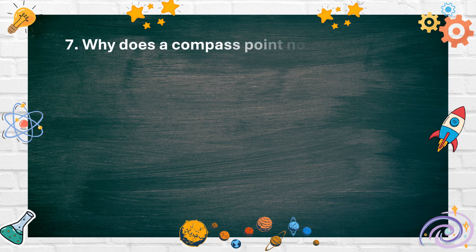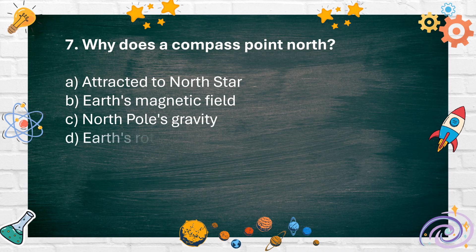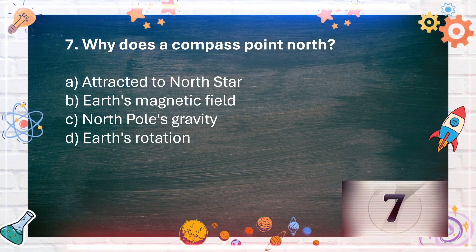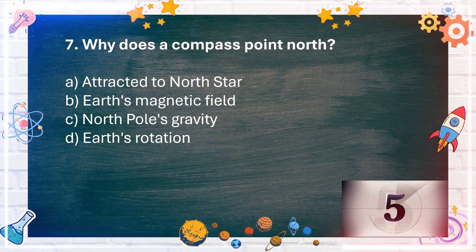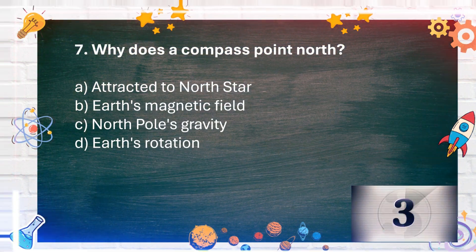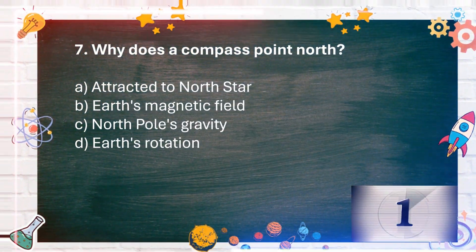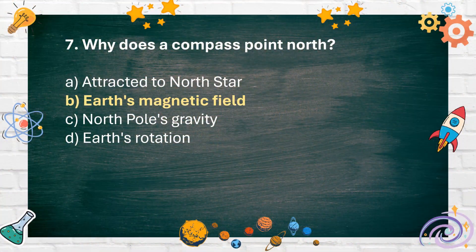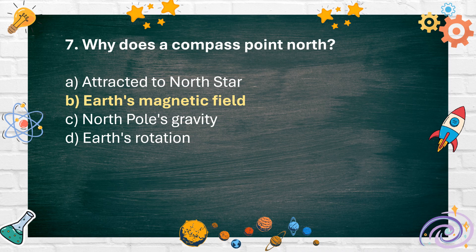Number 7. Why does a compass point north? A. Attracted to north star B. Earth's magnetic field C. North Pole's gravity D. Earth's rotation. The answer is B. Earth's magnetic field.